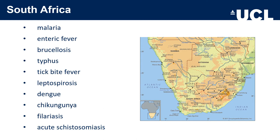South Africa — including Botswana, Namibia, Zimbabwe, Mozambique and Swaziland — has common endemic infections including malaria, enteric fever, brucellosis, typhus, tick bite fever, leptospirosis, dengue, chikungunya, filariasis and acute schistosomiasis.